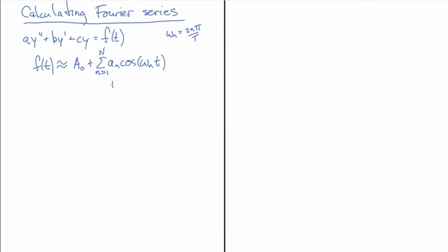And then we'll add to that the sum of n from n equal one to capital N of bn sine of omega n times t. And the challenge here is to figure out what are the best a0, an, and bn values to approximate f of t.